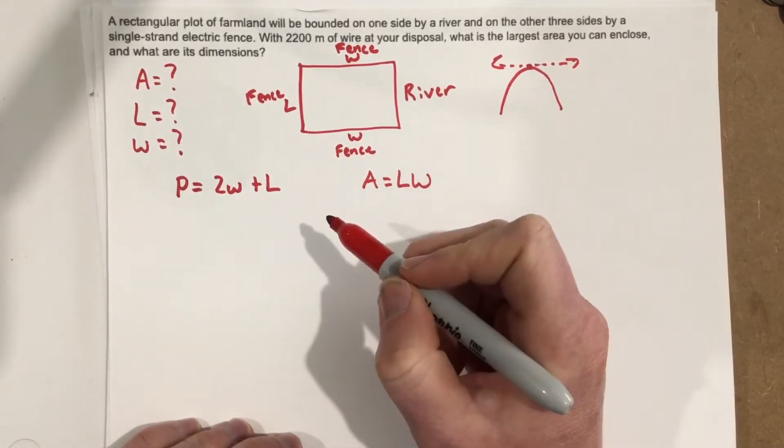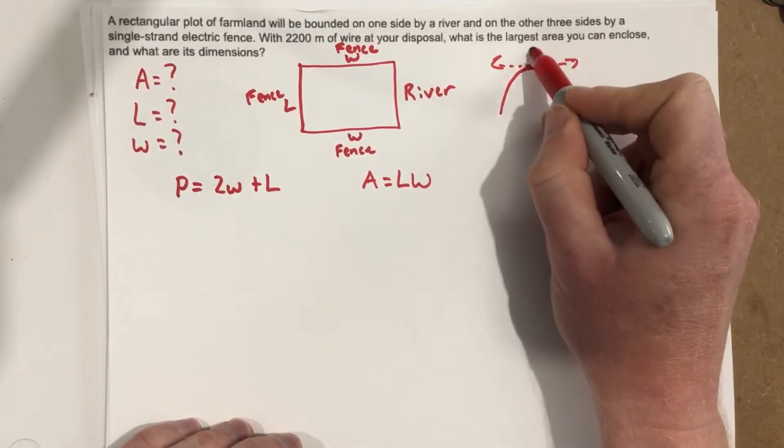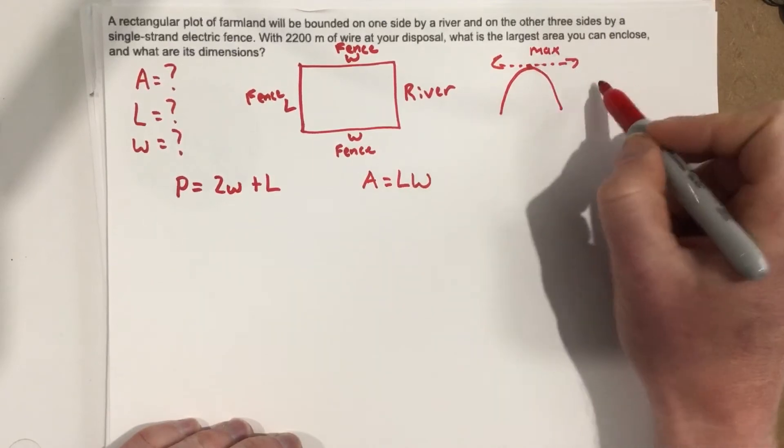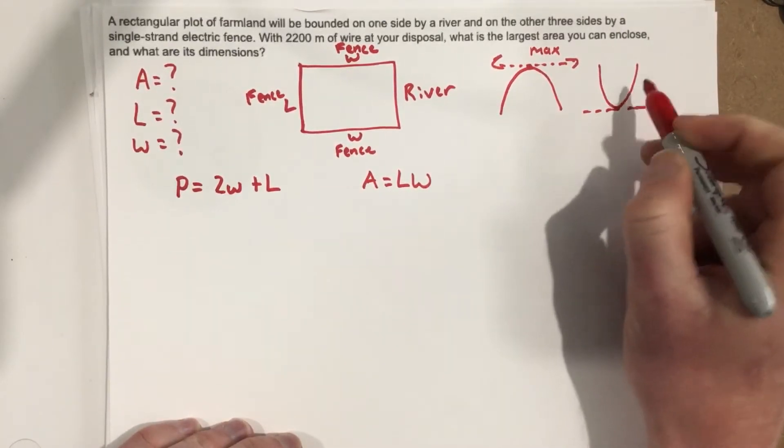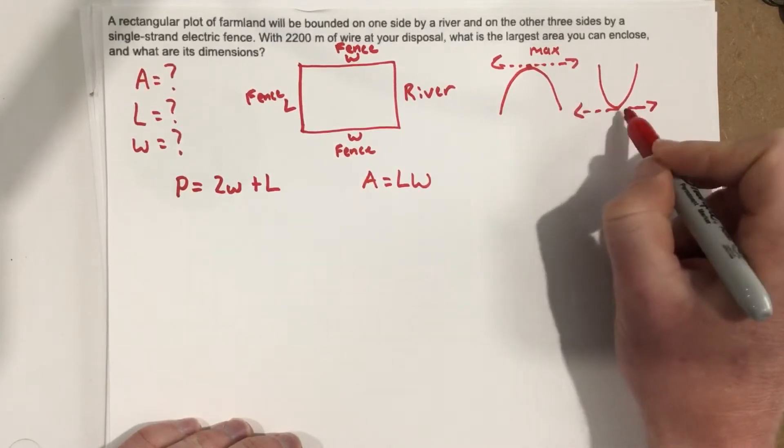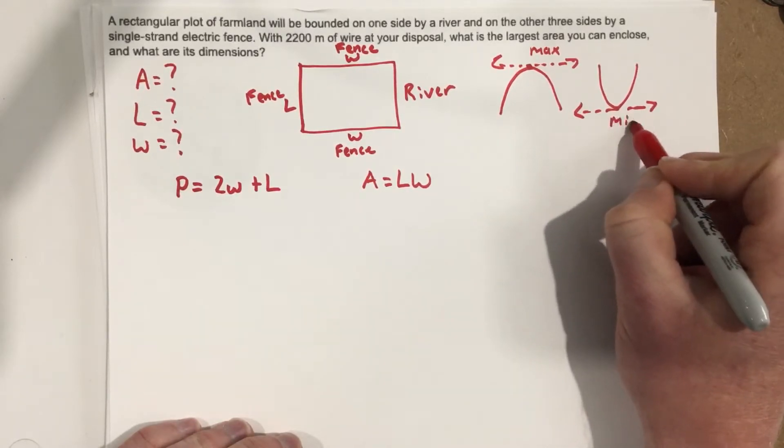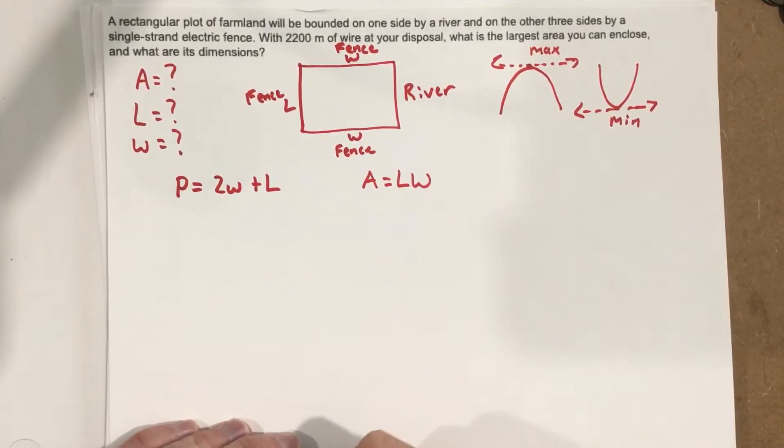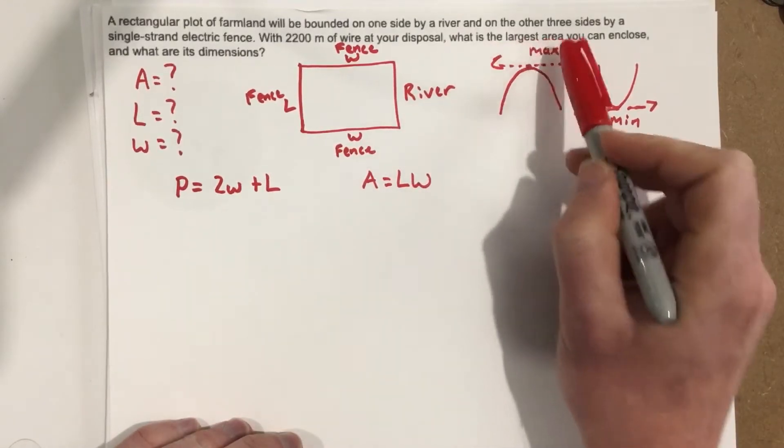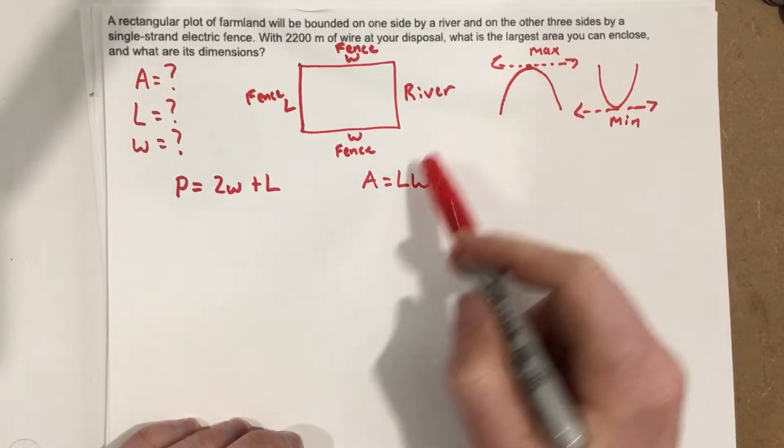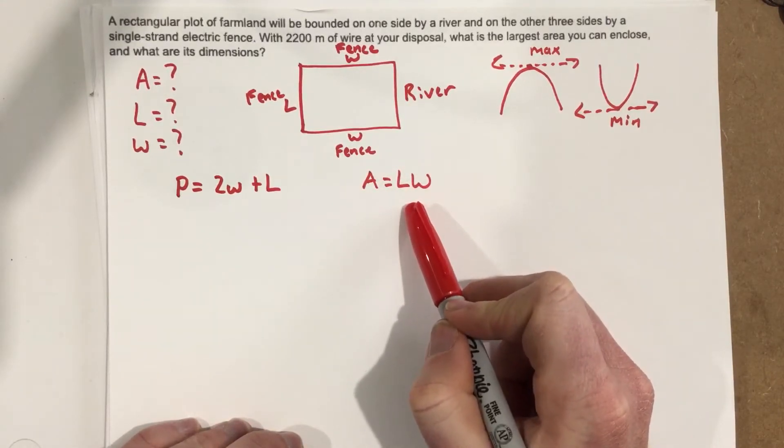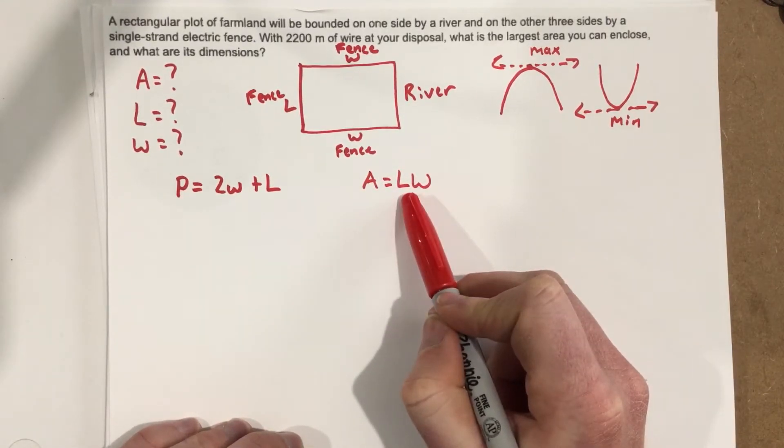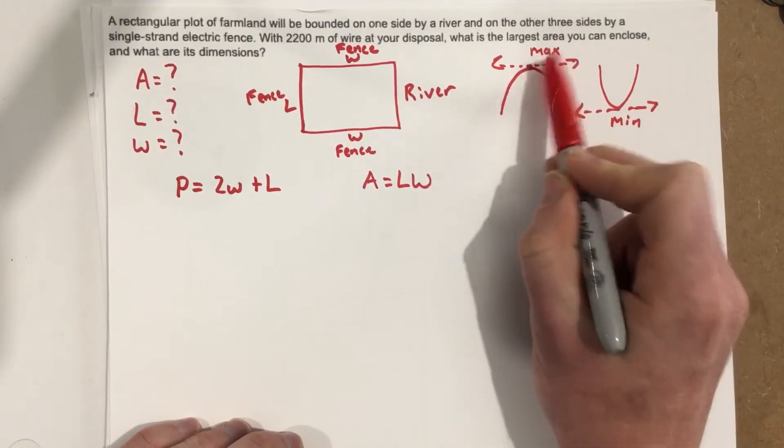Because if our tangent line has a slope of 0, then we know we have a maximum, or if the parabola is facing the other way and we had a tangent line here, our slope would be 0, that would be a minimum. In our case, they want to find the largest area, so we want to maximize area, meaning we're going to use the area equation, we're going to take the derivative of it, and set it equal to 0 to find its maximum.